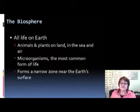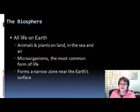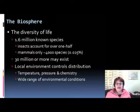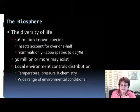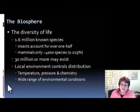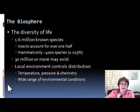The next subsystem is the biosphere — all life on Earth, including animals, plants, life on land, in the sea, and in the air. Microorganisms are the most common form of life, forming a narrow zone near Earth's surface. There are 1.6 million known species on Earth, and insects account for over half of them. Mammals are only 4,000 species — just 0.28% of all life on Earth. The local environment, including temperature, pressure, and chemistry, controls the distribution of life across different regions such as polar and tropical areas.